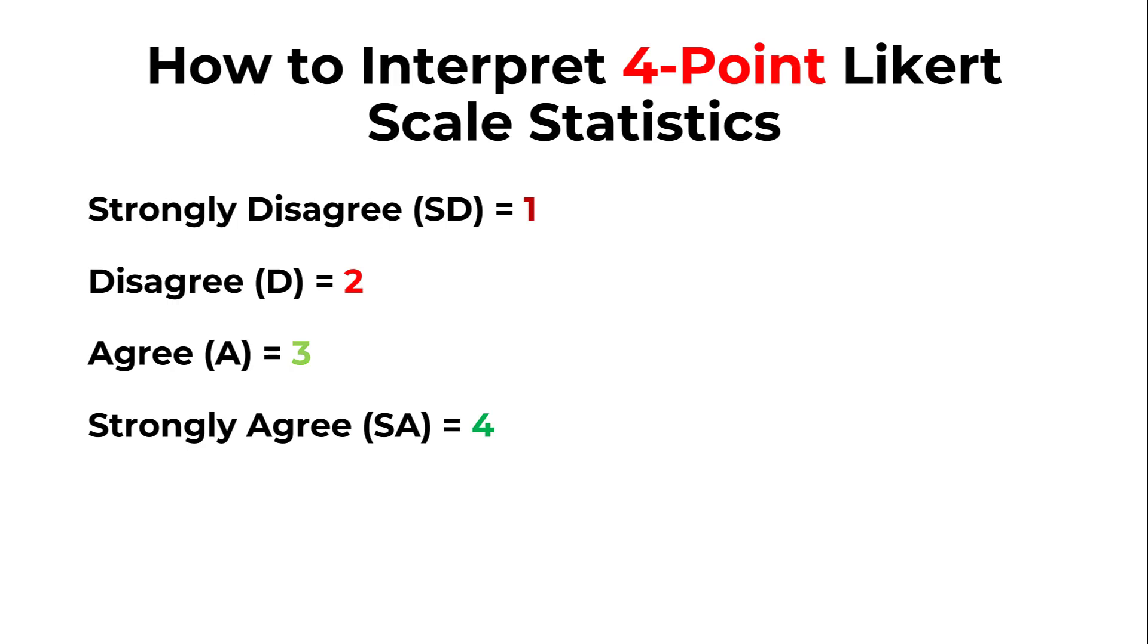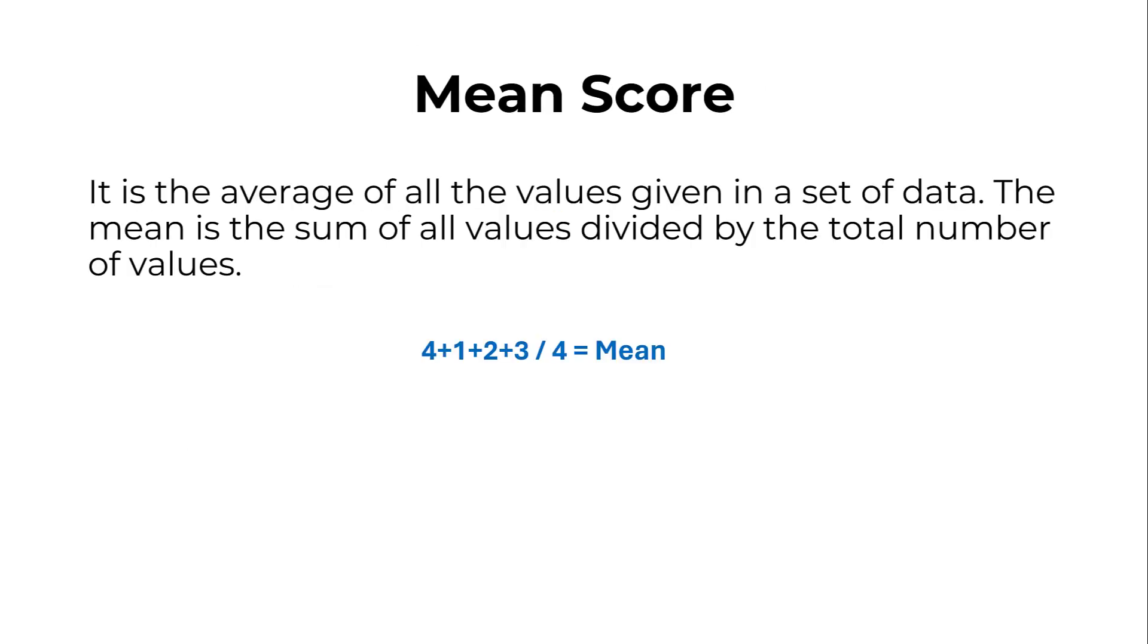We have a scale called the four-point Likert scale, or forced Likert scale, or Guttman scale, that is coded from one to four: one is strongly disagree, two is disagree, three is agree, and four is strongly agree. These are the codes assigned to the labels for statistical processing.